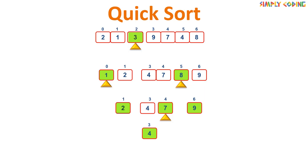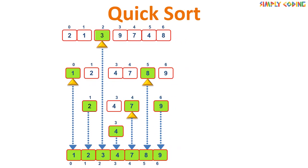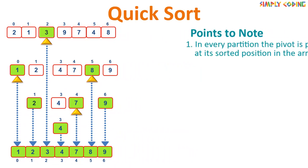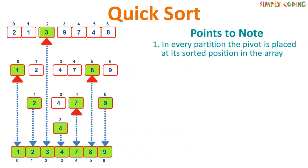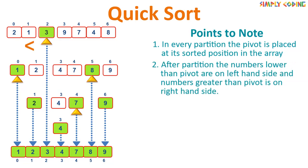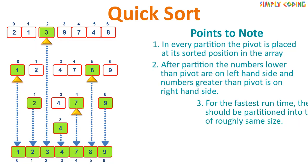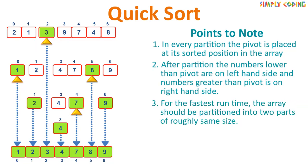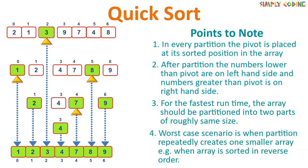If you combine them, you see we have our sorted array. A few points to note: in every partition, the pivot is placed at its sorted position in the array. After partition, numbers lower than the pivot are on the left and numbers greater than the pivot are on the right. For the fastest runtime, the array should be partitioned into two parts of roughly the same size. The worst case is when partition repeatedly creates one smaller array, such as when the array is already sorted in reverse order.